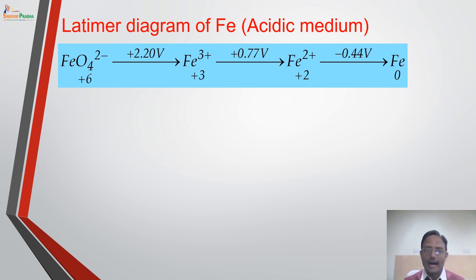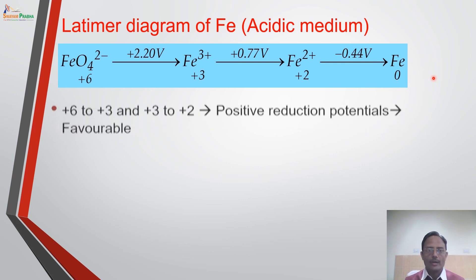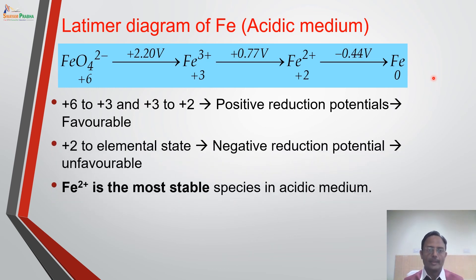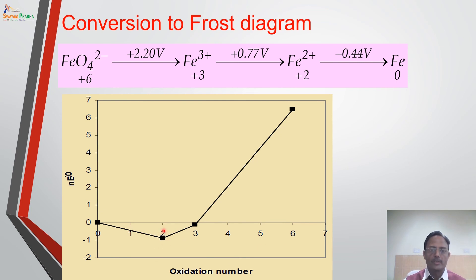Coming to the Latimer diagram of iron. Iron exists in +6, +3, +2, and 0 oxidation states. This is a Latimer diagram in acidic medium. The reduction potentials for conversion of +6 to +3 and +3 to +2 are positive, meaning these conversions are feasible, whereas +2 to 0 is a non-spontaneous process because the reduction potential is negative. So Fe2+ is the most stable compound in acidic medium, as also shown by the Frost diagram where +2 has the minimum value of N × E0.